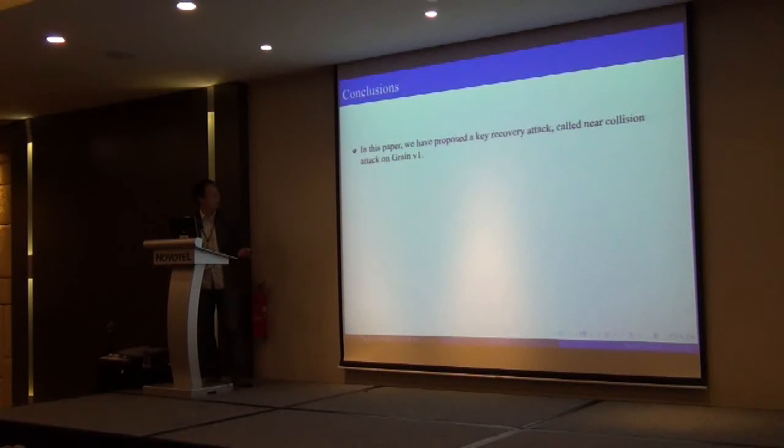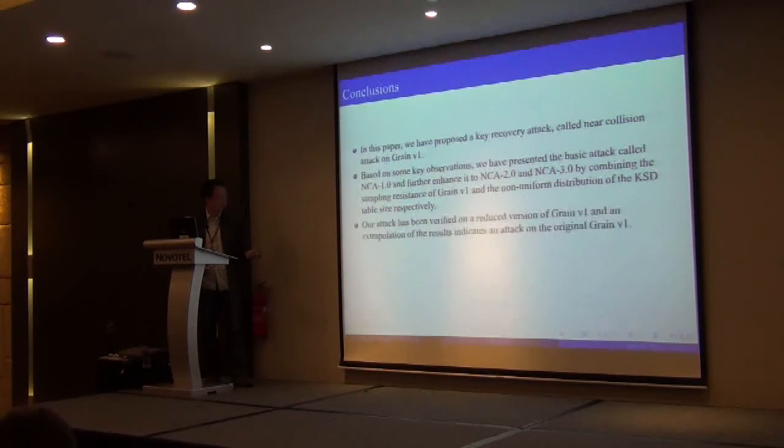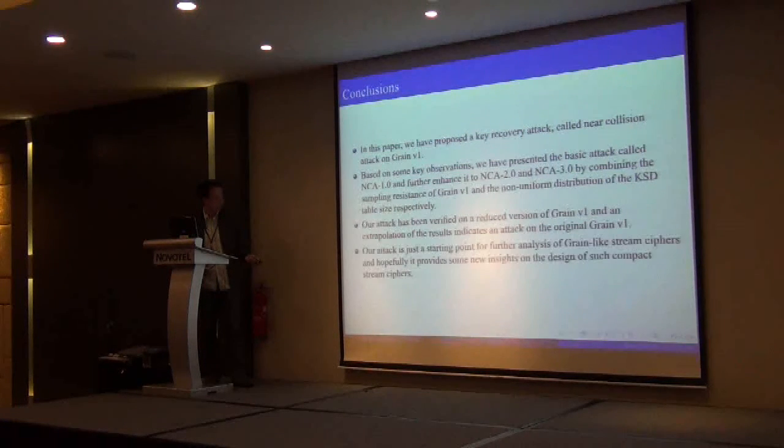Now we give some conclusions. In our paper, we presented a key recovery attack in the single-key model called near-collision attack on Grain-128. Based on some key observations, we have presented the basic attack NCA1 and NCA2 and NCA3 by combining the sampling resistance of Grain-128 and nonuniform distribution of the KSD table sets respectively. Our attack has been verified on a reduced version of Grain-128 and an extrapolation of the results in a linear way indicates an attack on the full version of Grain-128 with complexity as mentioned before. In our paper, we make a second assumption that our extrapolation is based on a linear model. We think that our attack is just a starting point for further analysis of Grain-like stream ciphers. And hopefully, it will provide some new insights on the design of such compact stream ciphers. Thank you.